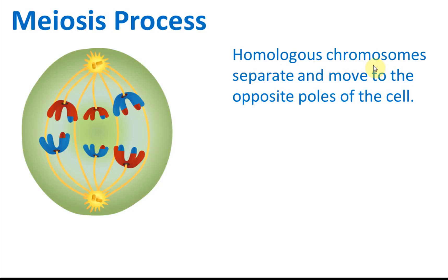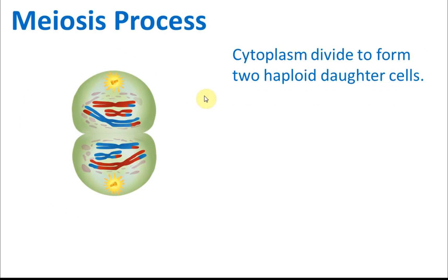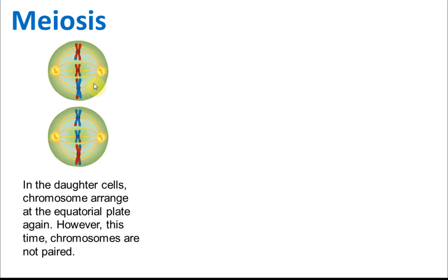After crossing over, the centriole moves to the pole and homologous chromosomes separate, being pulled to the opposite poles of the cell. Then the cytoplasm divides to form two haploid daughter cells.